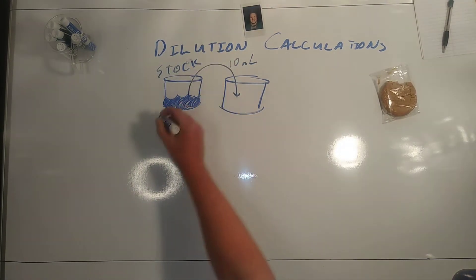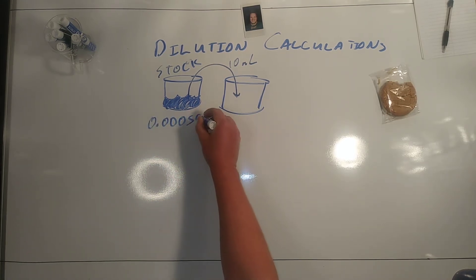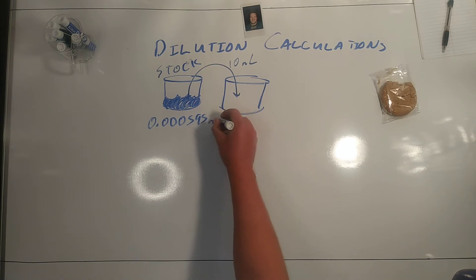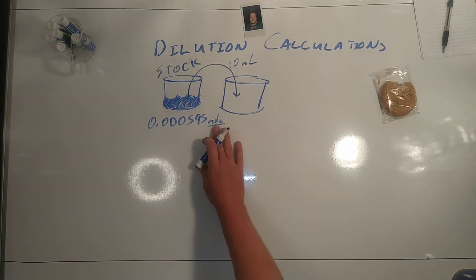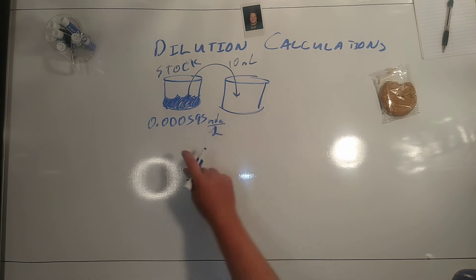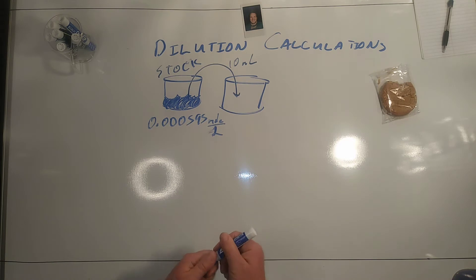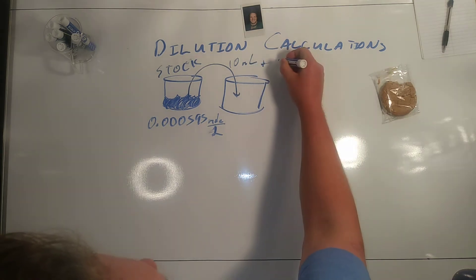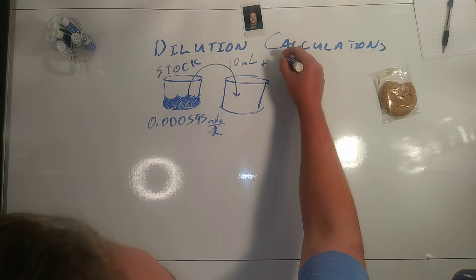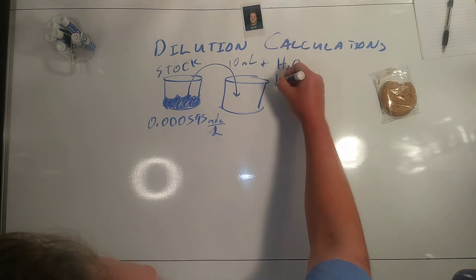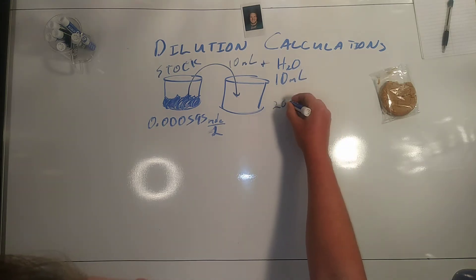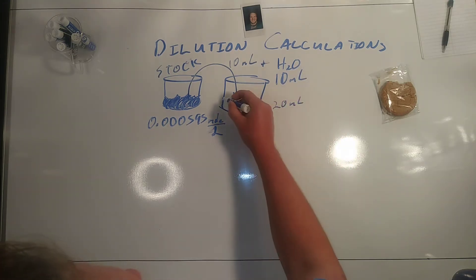That stock solution was 0.000595 moles over liters or molarity. We pipetted 10 milliliters of this into here and added H2O, 10 milliliters of H2O, making this total volume 20 milliliters. Now because this was a dilution...